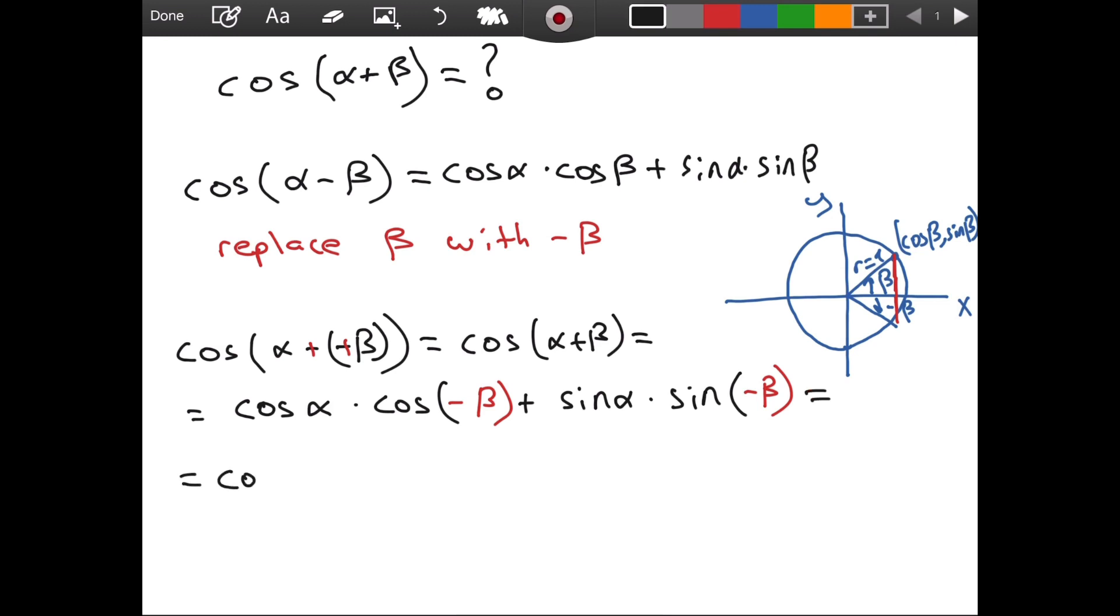So, what I'm trying to say is, let me write it, cosine of alpha times, instead of cosine of negative beta, we can write simply cosine of beta because they are equal. And how do we know that they are equal? Well, when we look at our diagram, we see that the corresponding x coordinates are the same.